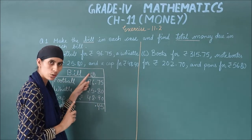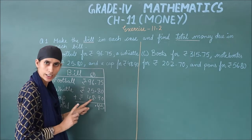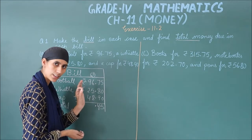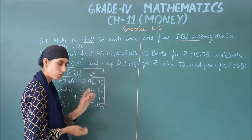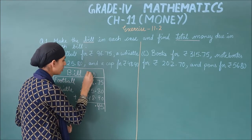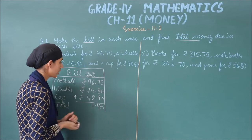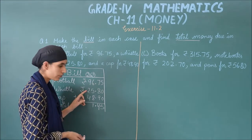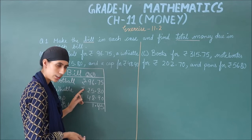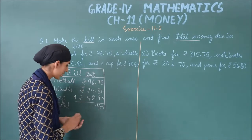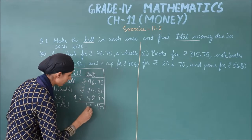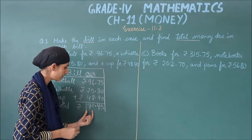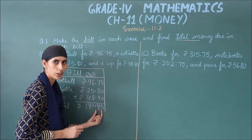Next: 6 plus 2 is 8, 8 plus 8 is 16, 16 plus 5 — counting: 17, 18, 19, 20, 21. So write 1, carry 2. Then: 9 plus 2 is 11, 11 plus 2 is 13, 13 plus 4 is 17. So the total bill amount is ₹171.45.